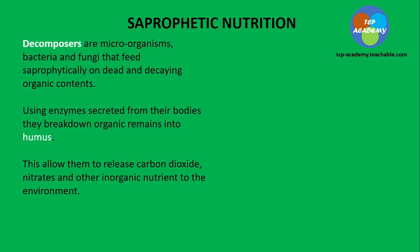The organic matter being decomposed is referred to as detritus, to bring it into that humus form. Now this allows decomposers to release carbon dioxide, nitrate, sulfate, and other inorganic nutrients to the environment. It's very important to note that the decomposers' chief role is to cycle nutrients in the environment. They release the trapped chemical elements in organic remains, including our nitrates and our sulfates.